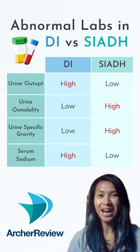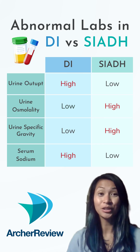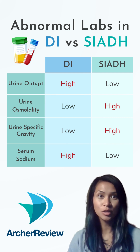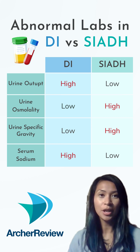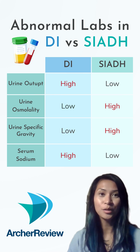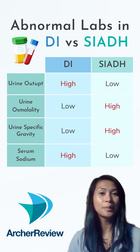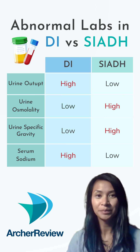Keep in mind, in DI, our patient is voiding large amounts of diluted urine, which will concentrate our bloodstream. In SIADH, the patient is retaining water, so that urine becomes concentrated and the blood becomes diluted.